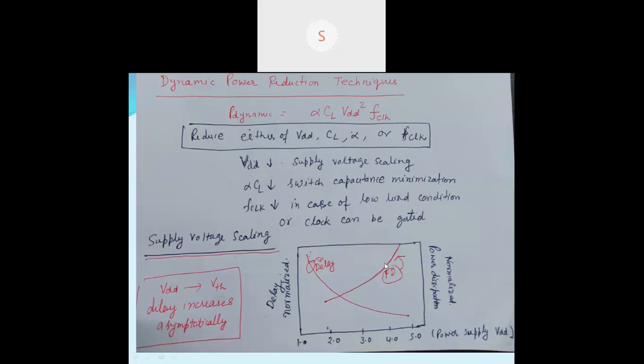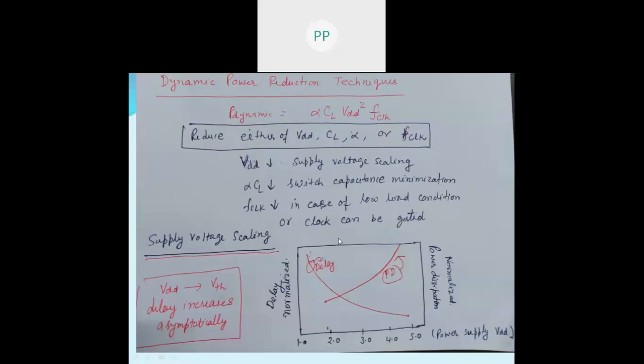I was talking about the supply voltage scaling relation with delay. When the supply voltage is scaled down, especially approaching the threshold voltage of the device, the delay increases asymptotically. There will be an optimized supply voltage value which could provide the best power dissipation as well as an optimized delay.